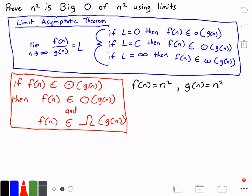Now what we're going to do is rewrite that limit theorem. We're going to get the limit as N approaches infinity of F(N) divided by G(N), and we know this equals some limit value. Let's replace F(N) with N squared and G(N) with N squared. So our equation will look like this: the limit as N approaches infinity of N squared divided by N squared.